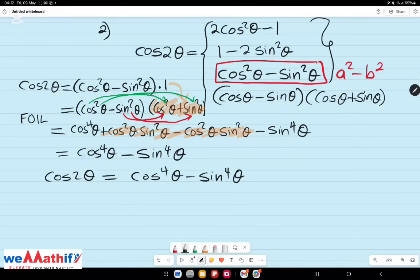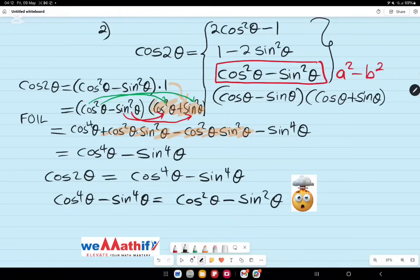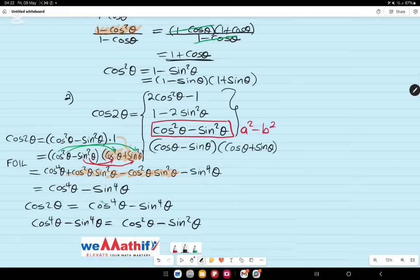And by extension, this also means that cos to the power 4 theta minus sine to the power 4 theta is equal to cos squared theta minus sine squared theta. So, in conclusion, cos 2 theta can also be written as cos to the power 4 theta minus sine to the power 4 theta.